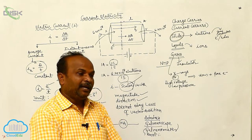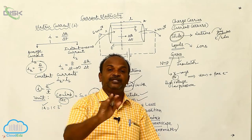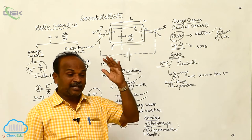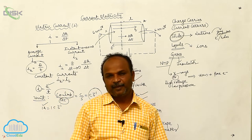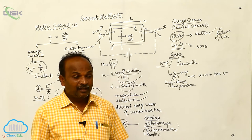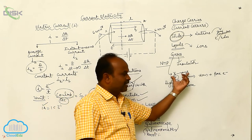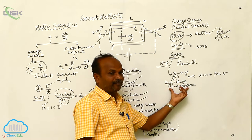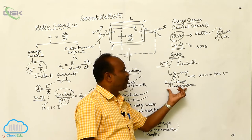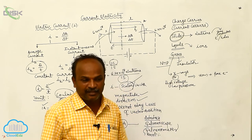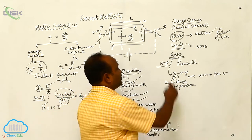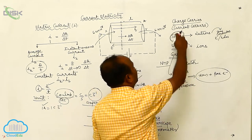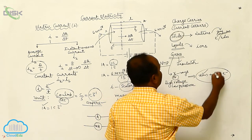At particular conditions, gases behave as conductors. When gases are exposed to X-rays, or when high voltage and low pressure are applied, the gases are split into ions and free electrons. In this particular case, the current carriers are ions as well as free electrons.